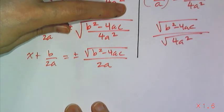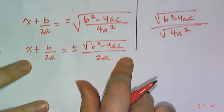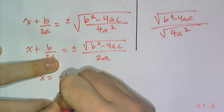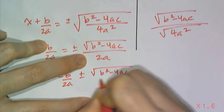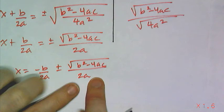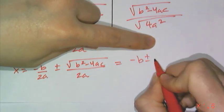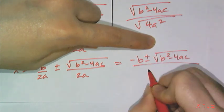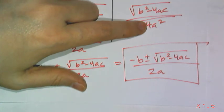Now I have to get x by itself so I have to subtract off the b over 2a so I get x equals negative b over 2a plus or minus the square root of b squared minus 4ac over 2a and since my denominators are common then I can rewrite that as negative b plus or minus the square root of b squared minus 4ac all over 2a which is our trusted quadratic formula.